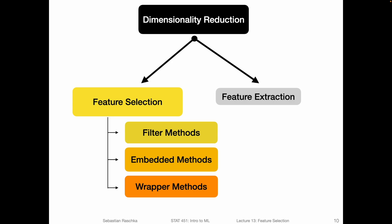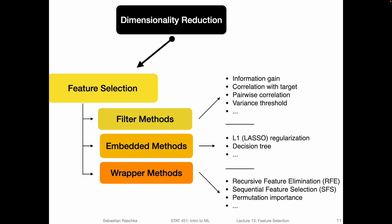These three categories are the filter methods, embedded methods, and wrapper methods. Starting a brief comparison between these different methods before we dive into more details, let's pick the filter methods. These filter methods are essentially methods that are focused on the intrinsic properties of the features. By that, I mean that these methods really just focus on the features themselves, and they don't really involve a model or classifier at this point.